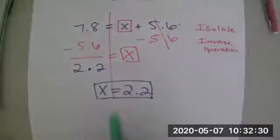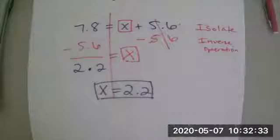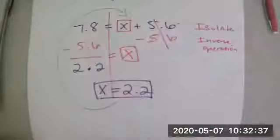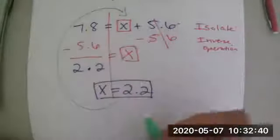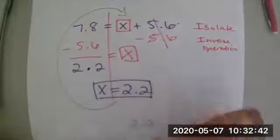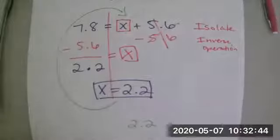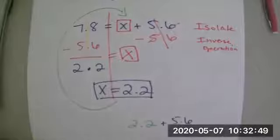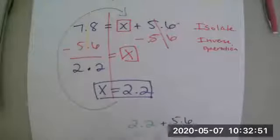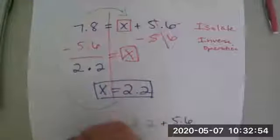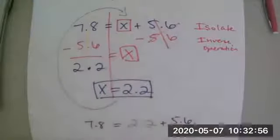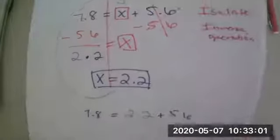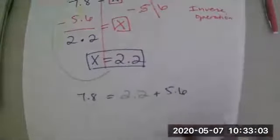So we're saying that x equals 2.2. So what we can do is we can plug in, instead of x, we can plug in 2.2 right there. So instead of x, we can say 2.2 plus 5.6. And if it's right, then the equation will be balanced, which means this side would equal 7.8. So if it's correct, if we add these up, it has to equal 7.8, because equations always have to be balanced. So let's see if it's right.